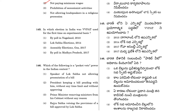Question 145: In which election in India was VVPAT used for the first time on an experimental basis? VVPAT was used for the first time in Nagaland by-poll in 2013. So 145, answer is option 1.